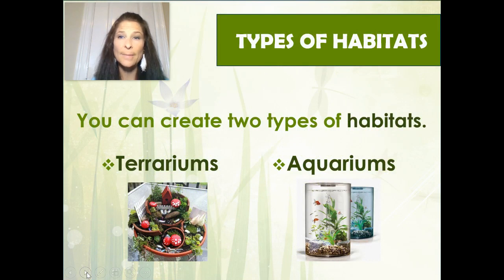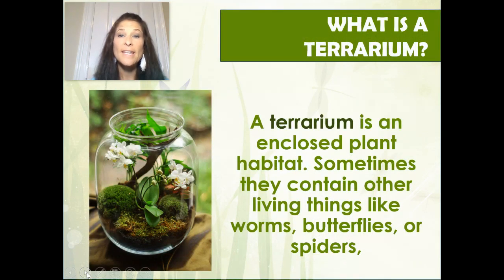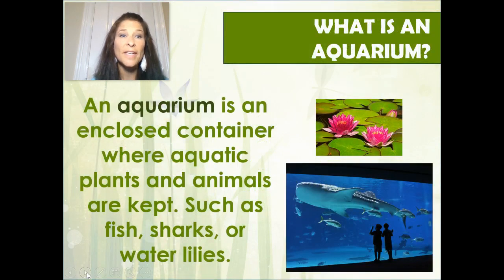You can create two types of habitats: terrariums and aquariums. A terrarium is an enclosed plant container, while an aquarium is where aquatic plants and animals are kept, such as fish, sharks, or water lilies.